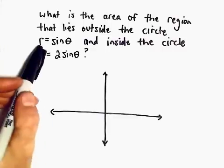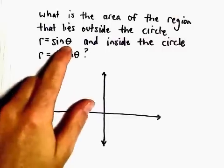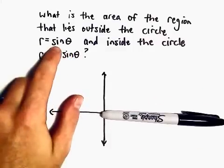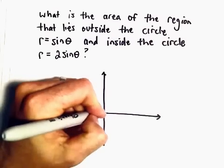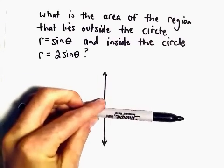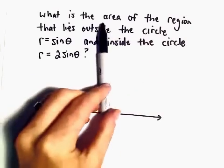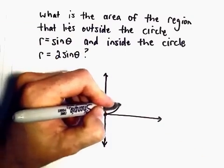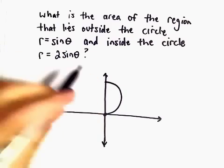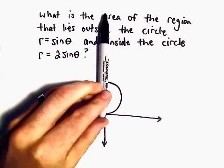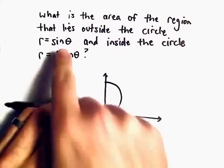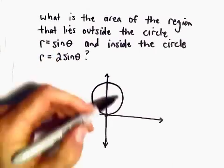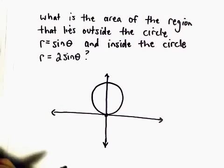So, first I'm going to graph r equals sine theta. Notice if our angle theta was equal to 0, if theta is equal to 0, we'll get r equals sine of 0, which is 0. As the angle increases from 0 up to pi over 2, sine is going to go from 0 up to 1. So what we're going to get is a little circle here. And then, as theta goes from pi over 2 to pi, the radius is going to go from 1 back down to 0.